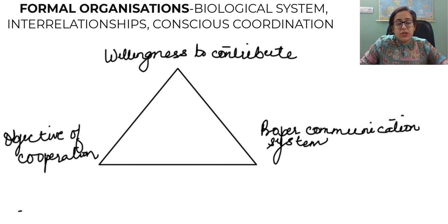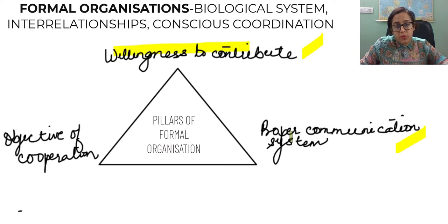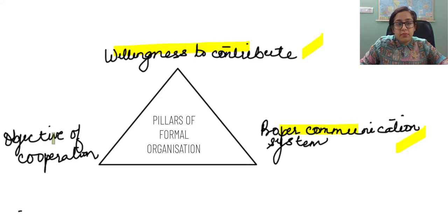Now formal organization rests upon three pillars, which can be highlighted in this form. Draw a triangle and on each edge you can write the pillars. That is the willingness of the people to contribute, a proper communication system and the objective of the cooperation must be clearly enunciated.